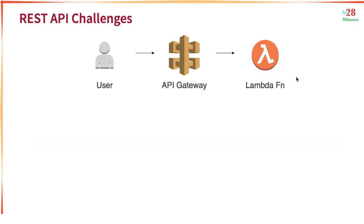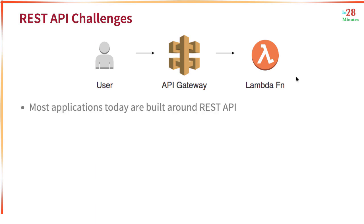Welcome back. In this step, let's start exploring API Gateway. Why do we need API Gateway? Typically in almost all architectures that you see with Lambda functions, right before the Lambda function would be an API Gateway. So why should your request go through an API Gateway? Most applications today are built around REST APIs, so you have GET, POST, PUT, and DELETE requests.